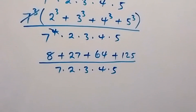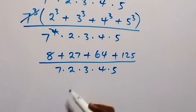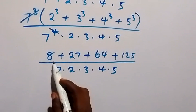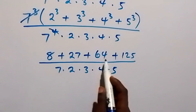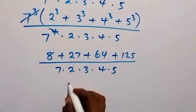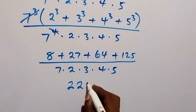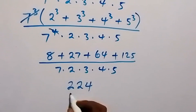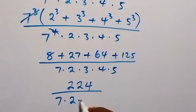When we sum this together, 8 plus 27 plus 64 plus 125 gives us 224, which is divided by 7 times 2 times 3 times 4.